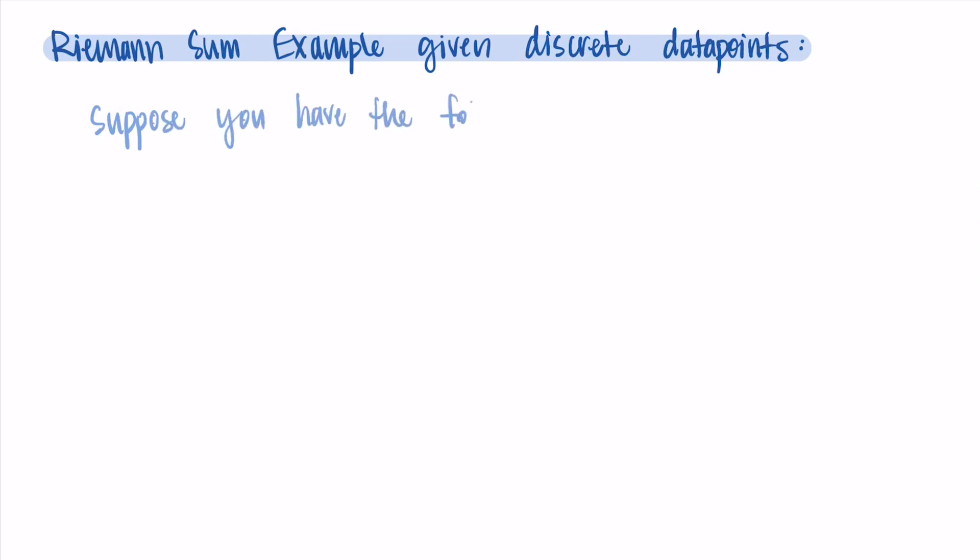Hi, welcome. So in this video, I'm just going to go through an example of finding a Riemann sum when we're given discrete data points. So discrete data points might sound like a lot, but the discrete word means basically just individual, like specific individual data points. And so you often see this when we have a table of values or some sort of individual measurements that have been taken and we're trying to do a Riemann sum with them.